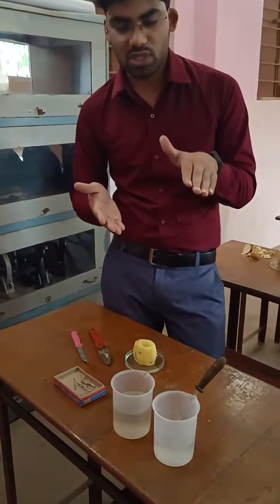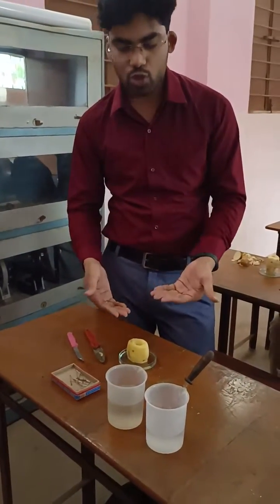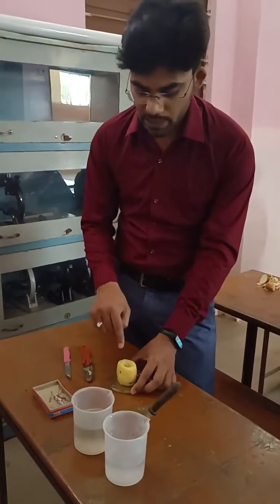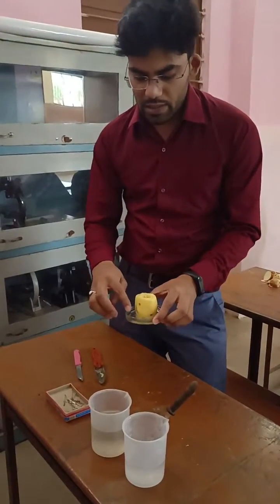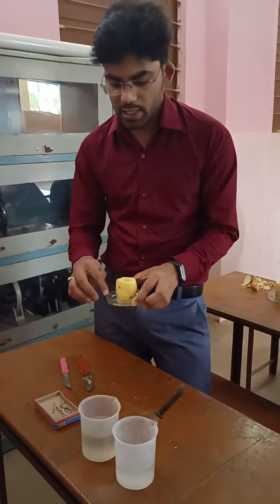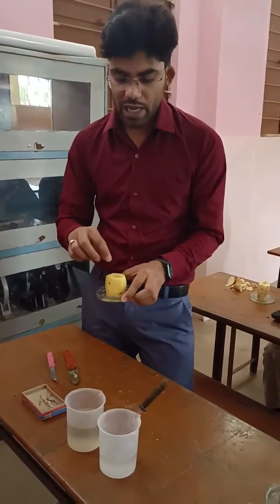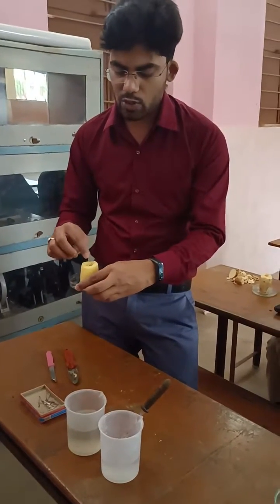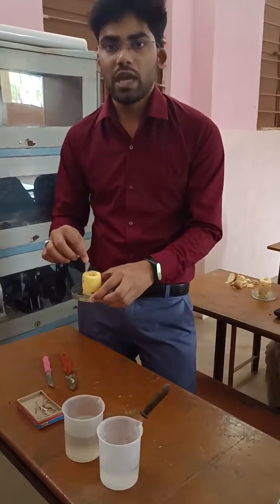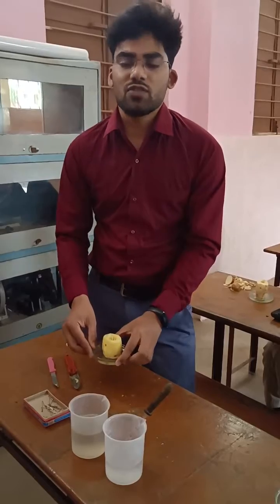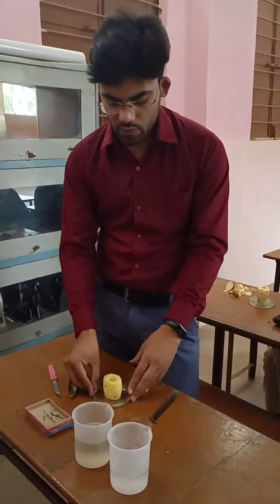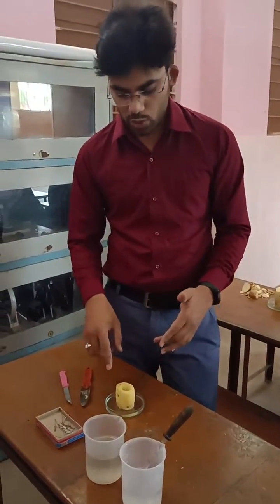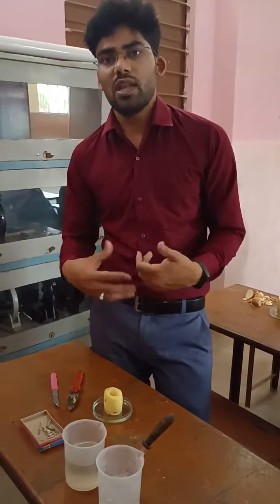For this activity, first of all we have to peel the potato and then we are going to cut the potato from both sides in order to make it flat. Later on we are going to make a cavity in it. In this petri dish we have filled water, and in this cavity we have filled the sugar solution. We are going to mark the level of the sugar solution with the help of an all-pin. Later on, after 15 to 30 minutes, we will notice that the level of the sugar solution in this potato cavity will rise.